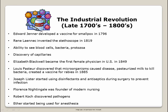The Industrial Revolution, the late 1700s to the 1800s. Edward Jenner developed a vaccine for smallpox in 1796. René Laennec, the father of pulmonology, invented the stethoscope in 1819. Technology led to the ability to see blood cells, bacteria, and protozoa, and capillaries were first discovered. In 1849, Elizabeth Blackwell became the first female physician in the United States. Louis Pasteur discovered that microorganisms cause disease, leading to the pasteurization of milk to kill bacteria. In 1885, Pasteur also created a vaccine for rabies. Joseph Lister started the practice of using disinfectants and antiseptics during surgery to prevent infection.